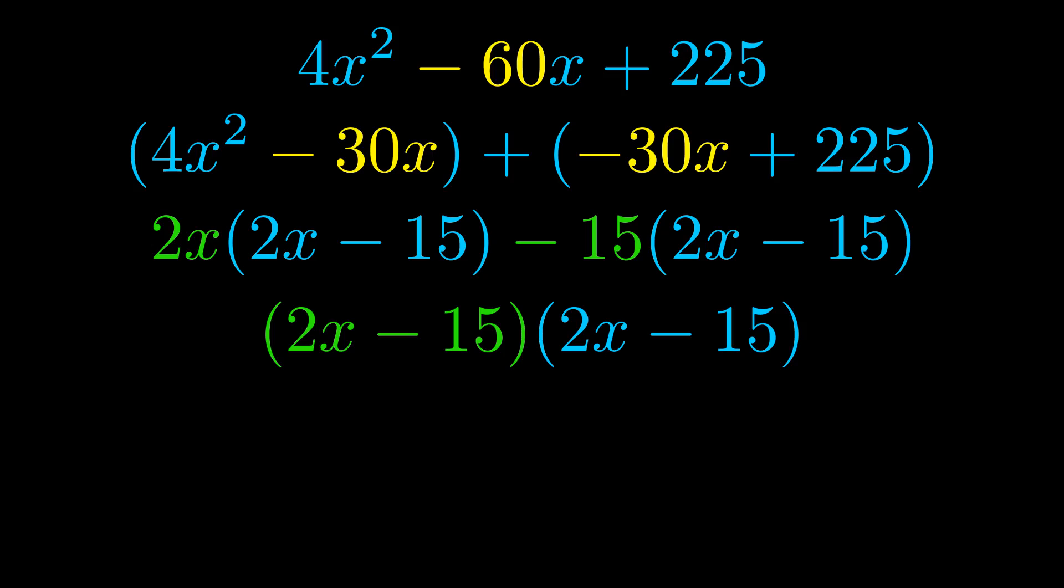Those blue values will become one of our factors and we will combine the two green values, the GCFs that we pulled out, to get the other one. And that is our fully factored equation.